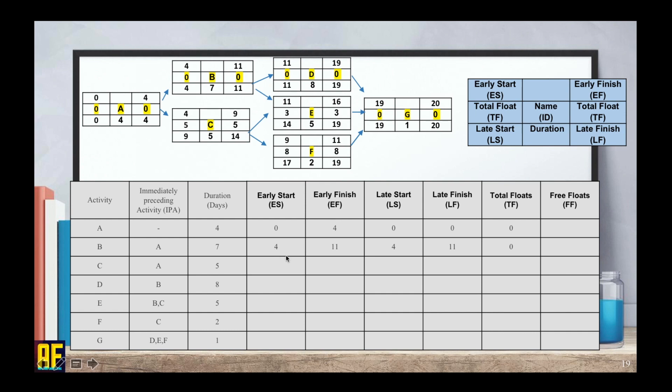Here is my information for activity B. Again, early start 4, early finish 11, late start 4, late finish 11 and total floats 0 and 0. And I am just going to place here the rest of the answers.